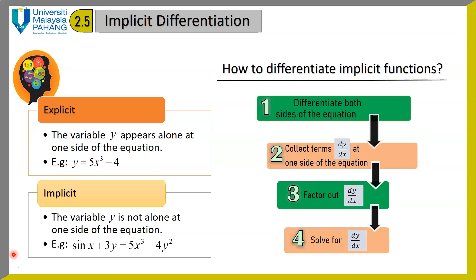In mathematics, we have two types of functions: explicit function and implicit function. An explicit function means the variable y appears alone on one side of the equation. For example, y equals 5x cubed minus 4.